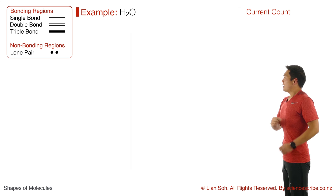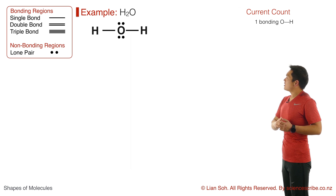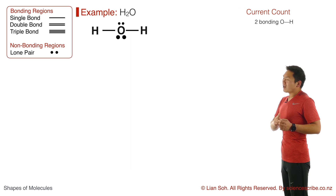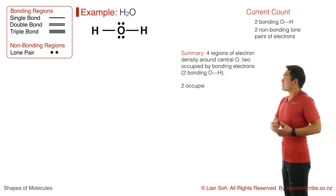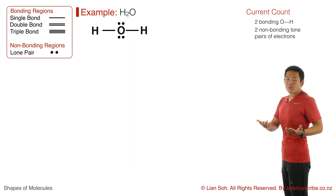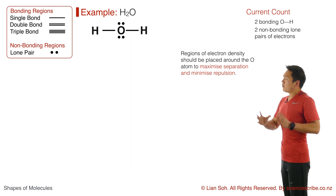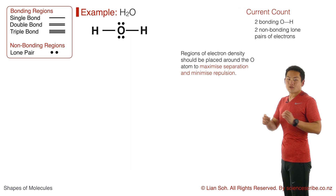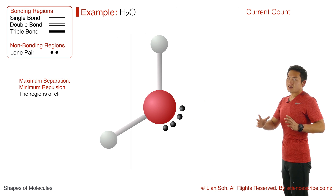In a last example, let's find the shape for water, H₂O. The Lewis diagram goes down: a single bond to an H is one region, another single bond to an H is another region, and there are two lone pairs — each counts as one region. So in total there are four regions of electron density around the central oxygen atom: two occupied by bonding pairs of electrons and two occupied by non-bonding pairs. All four need to be placed around the central oxygen atom in a way that minimizes repulsion by maximizing separation.